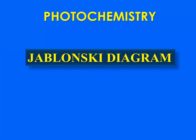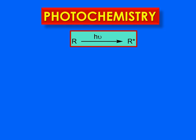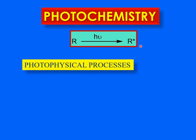Hello everyone, today we will be talking about photochemistry, and to start with we'll discuss the Jablonski diagram. Photochemistry basically deals with the study of the processes that take place when light interacts with molecules. When a reactant R, or the molecule, is hit by some radiation, it is shifted to an excited state. This excited state can undergo different processes.